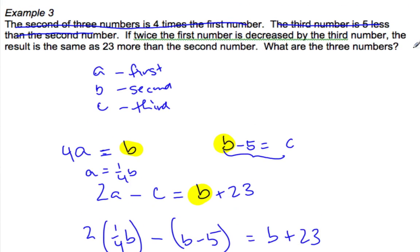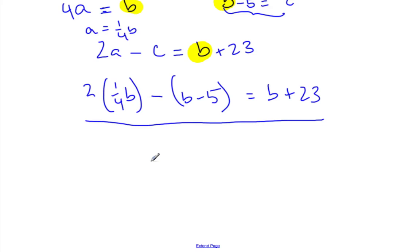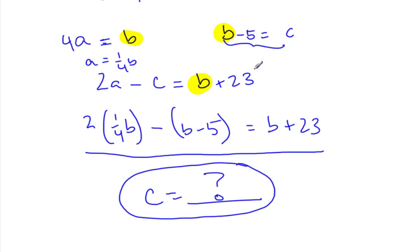If we do the substituting, I know 2 times one quarter B, minus C which is B minus 5, equals B plus 23. We've got one equation with one variable. Now let's leave them to solve it. Which of the three numbers do we want them to put into Google Docs? Let's find C, the third number. You'll have to find B from solving that equation and then go back and find out what C is.